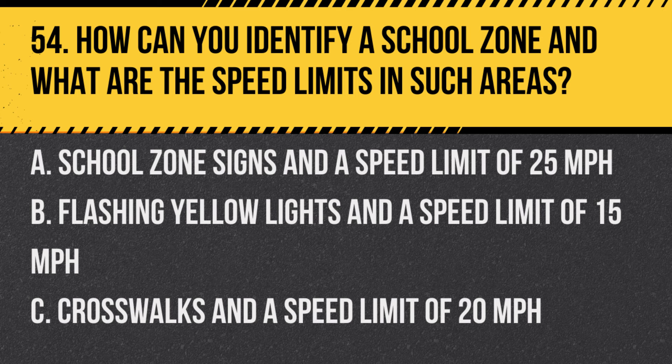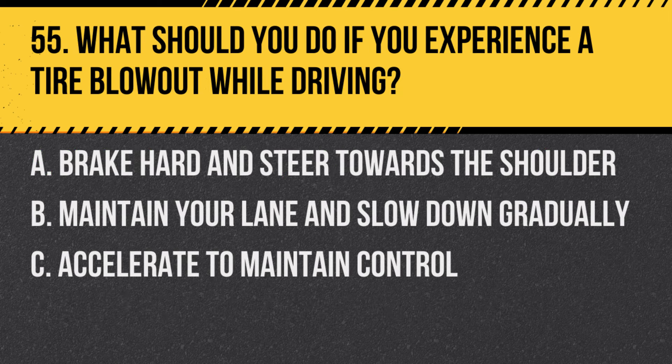Question 54: How can you identify a school zone and what are the speed limits in such areas? A. School zone signs and a speed limit of 25 miles per hour. B. Flashing yellow lights and a speed limit of 15 miles per hour. C. Crosswalks and a speed limit of 20 miles per hour. Answer: A. School zones are marked with signs, and the speed limit is typically 25 miles per hour when children are present.